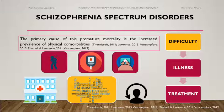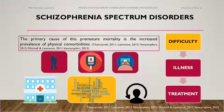The primary cause of premature mortality is the increased prevalence of physical comorbidities. Of particular concern are metabolic and cardiovascular disease. Patients with schizophrenia are also four times more likely to be overweight, have a two-fold increased risk for diabetes, and show a two to three times higher prevalence of dyslipidemia compared with the general population. In addition, people with schizophrenia are more likely to receive sub-optimal medical care to address these potentially fatal physical comorbidities.